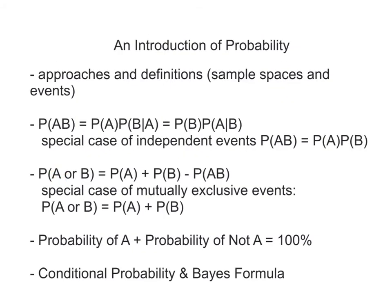To summarize the addition rule: P(A or B) = P(A) + P(B) − P(A and B). We subtract to avoid double-counting when A and B both occur. For mutually exclusive events, P(A or B) = P(A) + P(B) since P(A and B) = 0 — mutually exclusive events never occur together. Also worth noting: the formula P(A) + P(not A) = 100% is sometimes useful when it's easier to calculate 100% minus the probability of A not occurring.